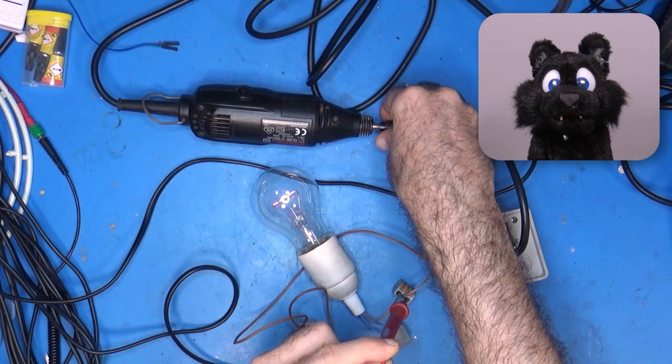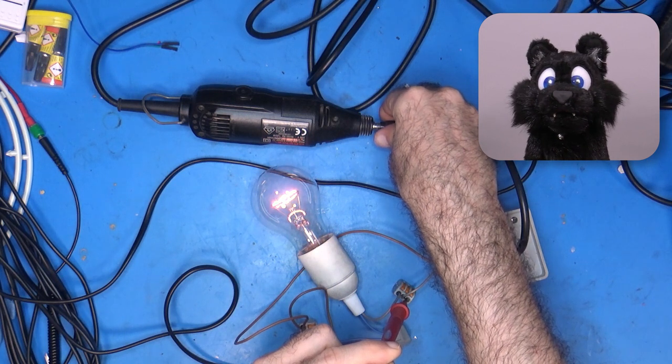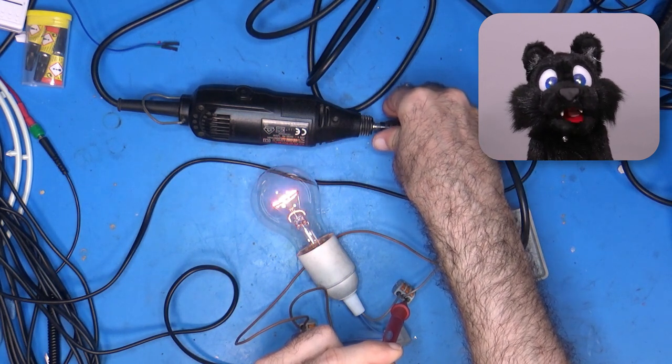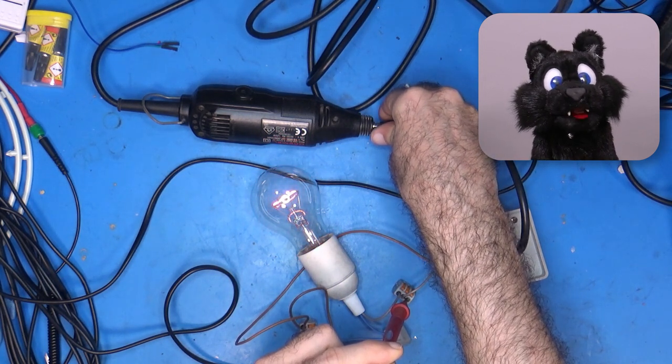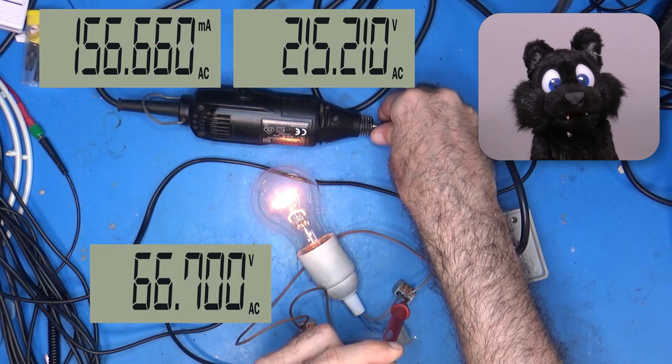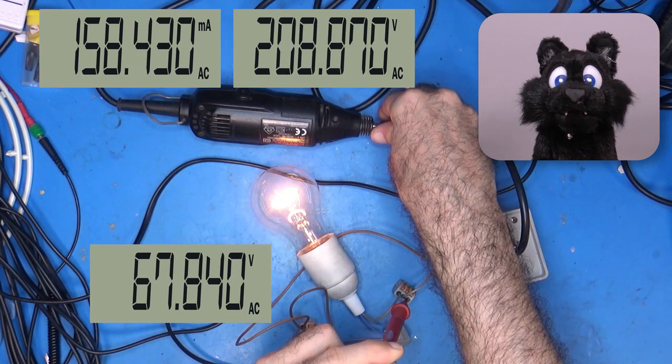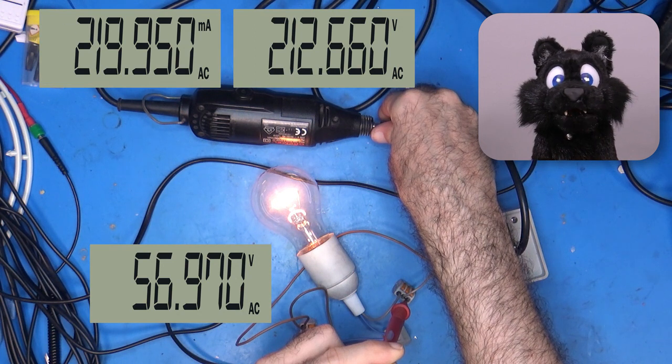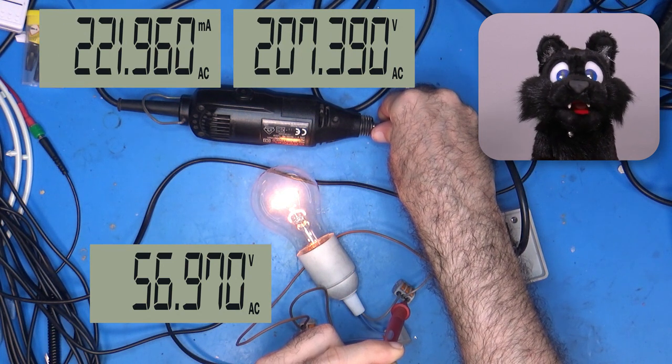If I try to stall the motor, the current draw rises, which means that the resistance of the device decreased and more current can flow, causing the filament in the bulb to heat up and raise its own resistance. And the bulb starts to light up brighter.